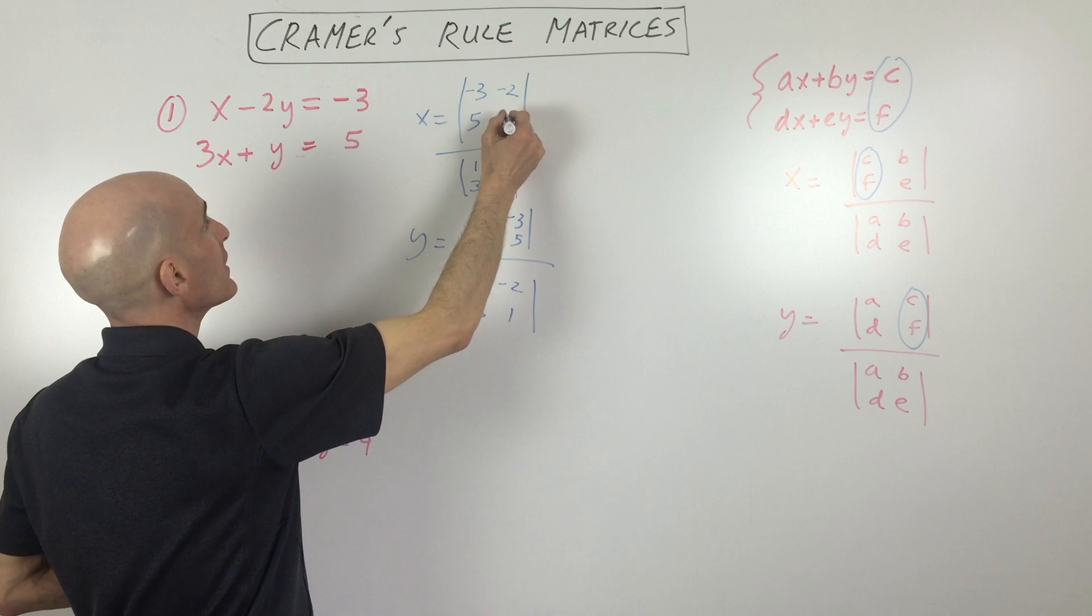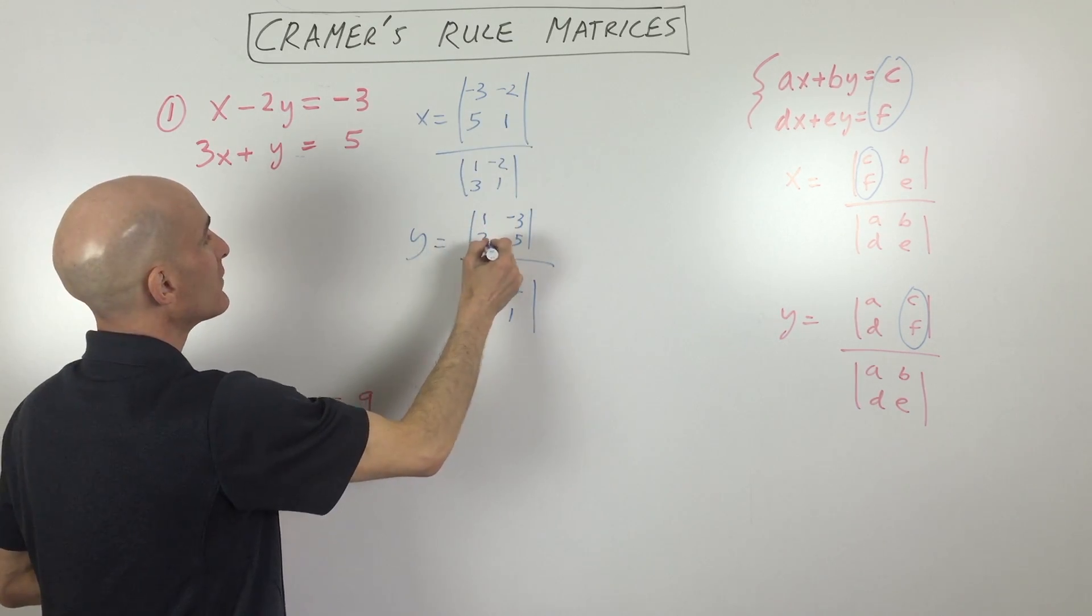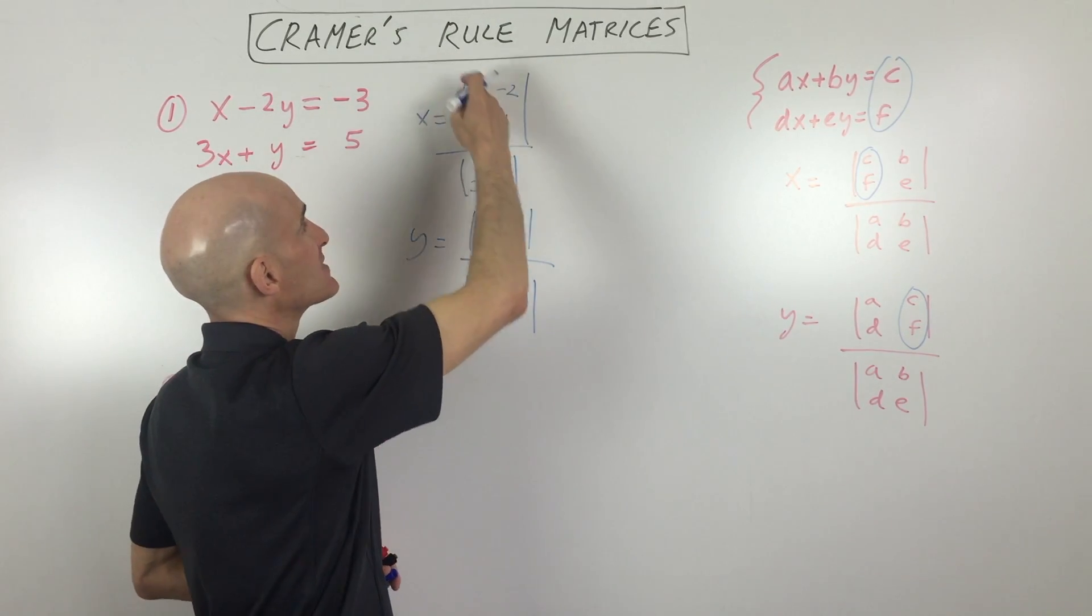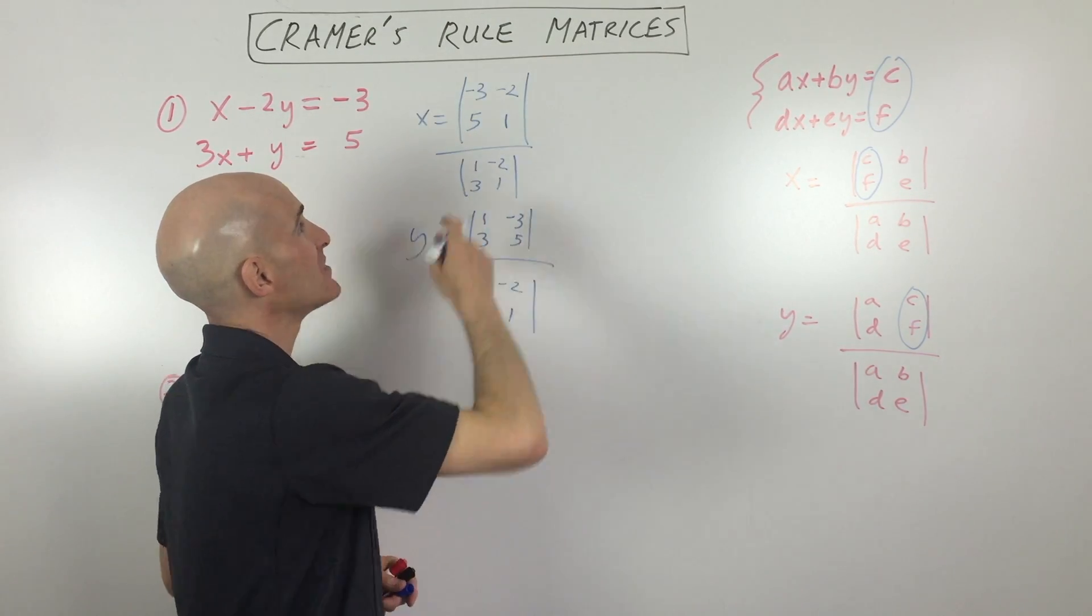So we've got negative two and one. Here we have one and three. Sorry, with me so far? So now we're just going to take the determinant. So that's ad minus bc.